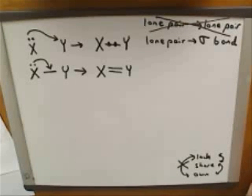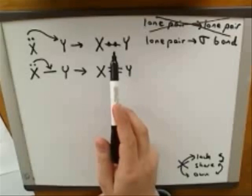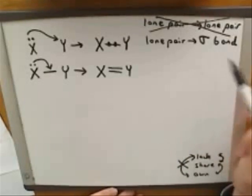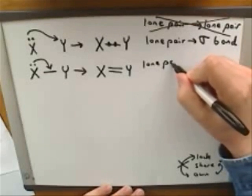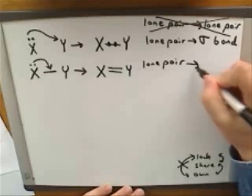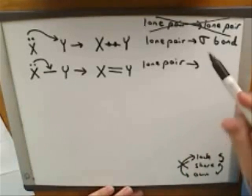Okay, so you can see it turned out to be a different type of transition from our previous examples. Our previous examples were lone pairs that were forming sigma bonds. What are we doing now? We still started with a lone pair, but now we formed a pi bond, right?